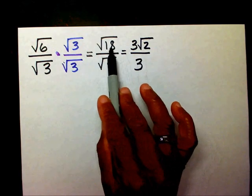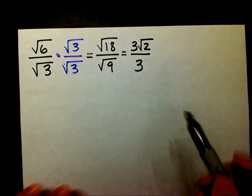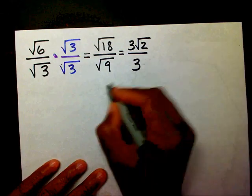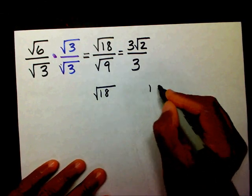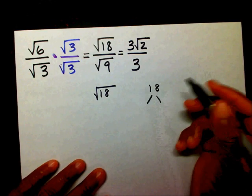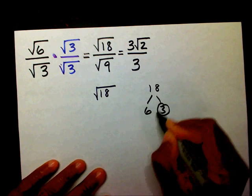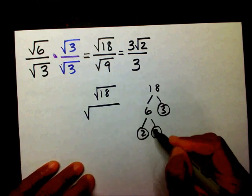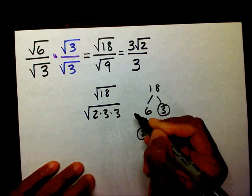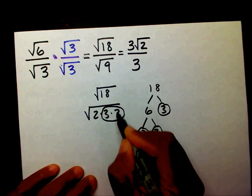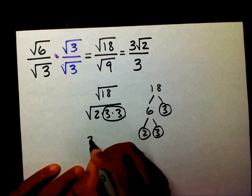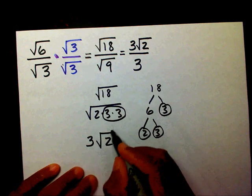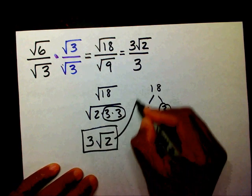If you don't understand how I went from this point to this point, let's do that process right now. I had radical 18, so I'm going to make a factor tree for 18: 6 and 3, then 2 and 3. So my prime factorization is 2 times 3 times 3. 3 times 3 is 9, and 9 is a perfect square. So radical 9 is 3, giving you 3 radical 2. That's how you got that.